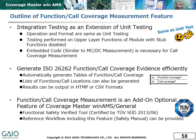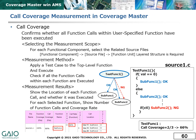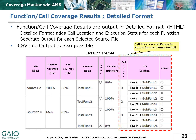CoverageMaster WinAMS allows for function and call coverage measurement as an additional optional feature. Function coverage is measured by specifying the functional component to be measured. A test case is then executed and the functions called are recorded. Similarly, call coverage is measured by selecting the source files for measurement and applying a test case. The results show which functions were called, how many times, and the coverage rate. The standard format for these coverage measurement results is HTML, but CSV output is also possible. A detailed format output can also be selected, which includes call location and execution status for each function.